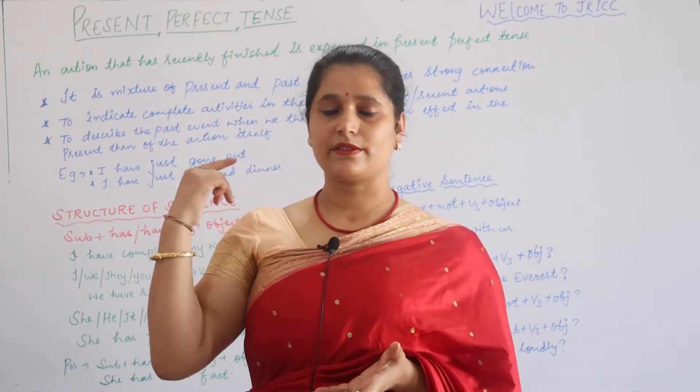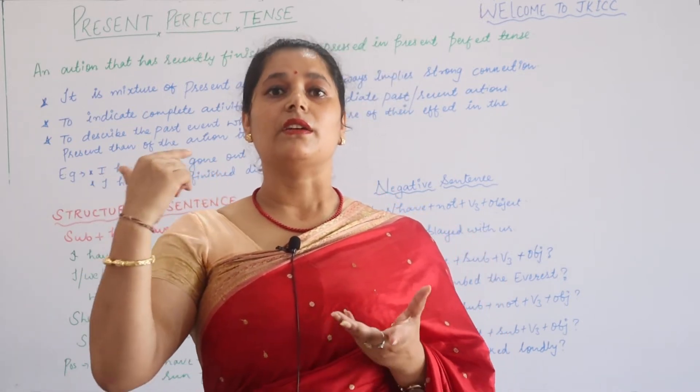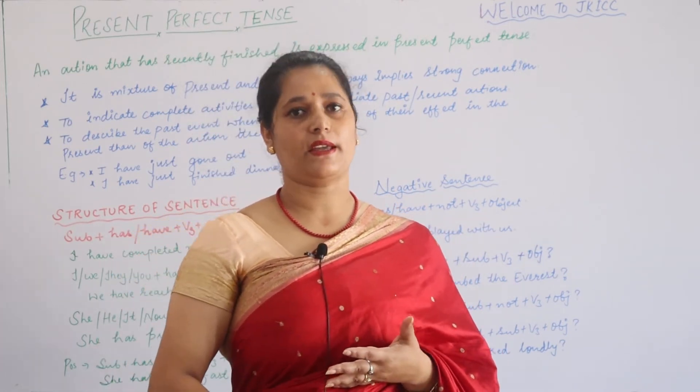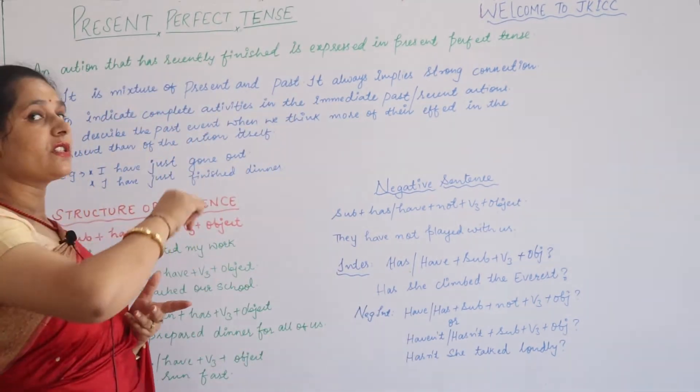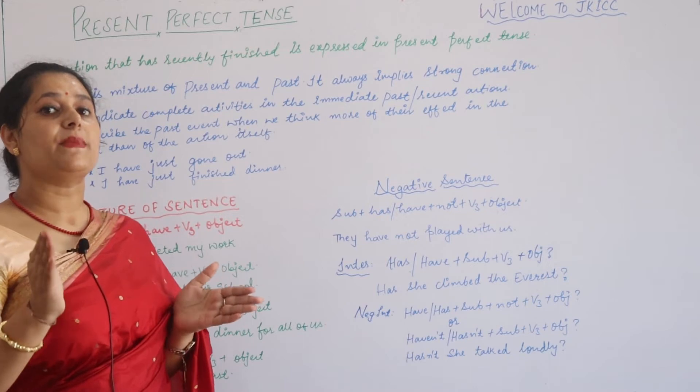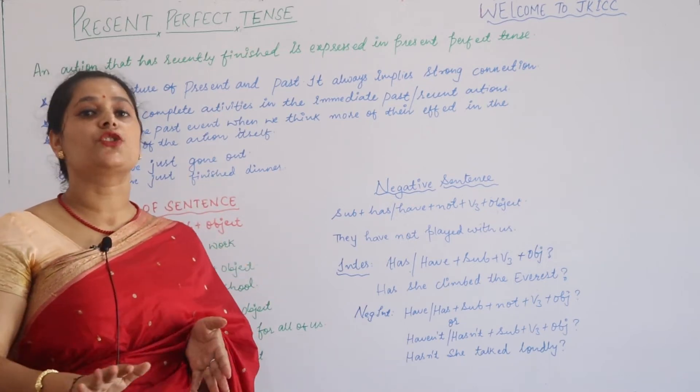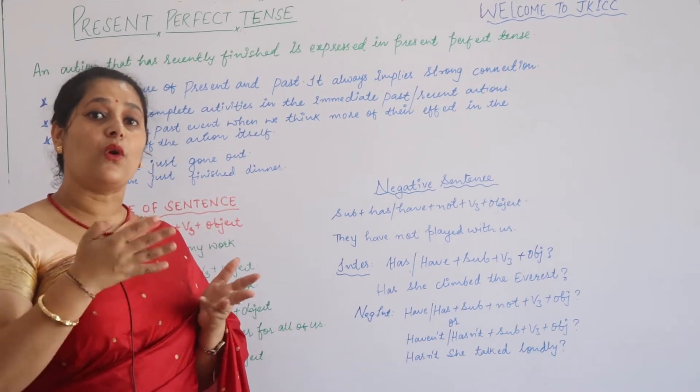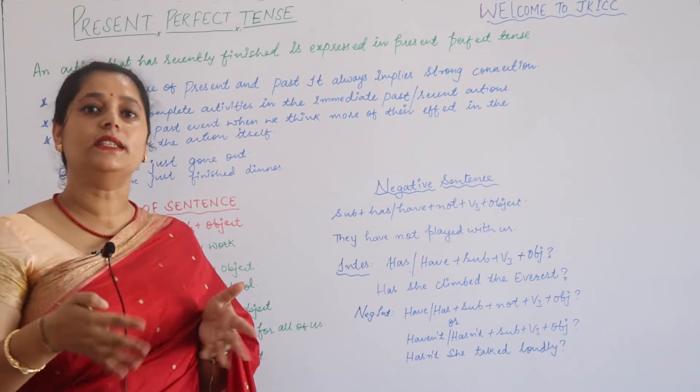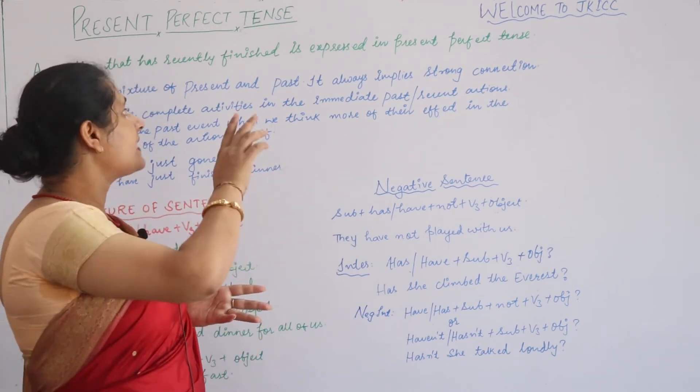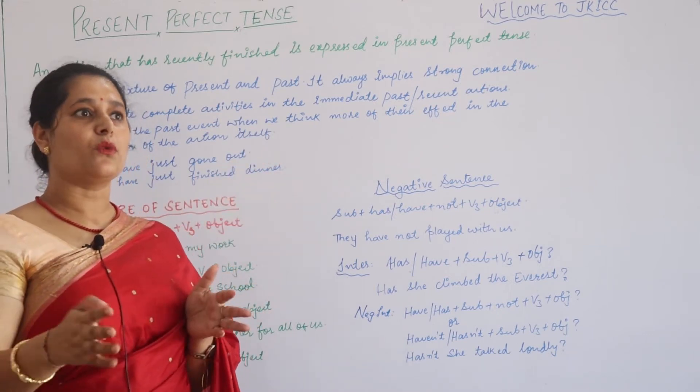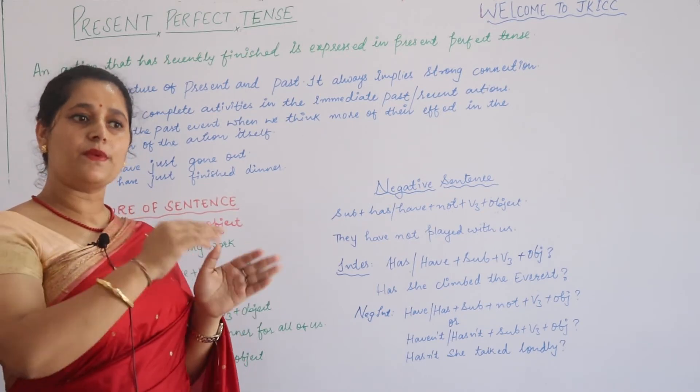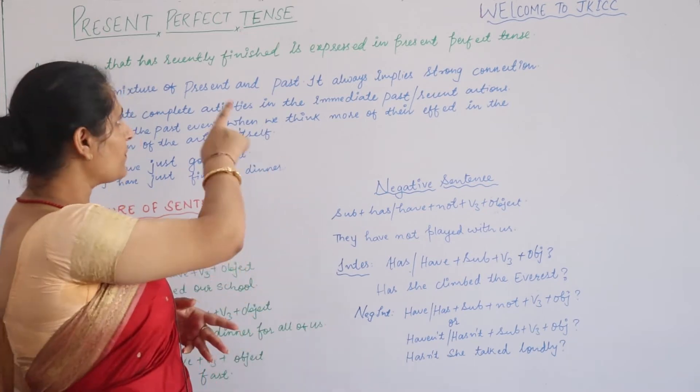I have written here definition and certain points. Remember the word 'ho chuka hai' - ho chuka hai means the work that is perfectly done is expressed in present perfect tense. Yeh simple present tense ya present continuous tense se alag hai. Jab chuka hai bolna ho, we use present perfect tense.